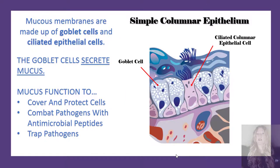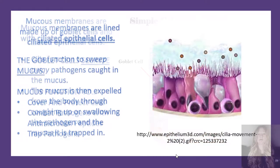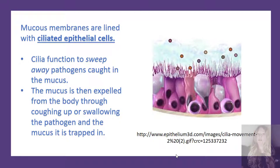The mucus membranes are made up of goblet cells and ciliated epithelial cells. The goblet cells have the job of secreting mucus. Mucus functions to cover and protect cells, to combat pathogens with antimicrobial peptides, and to trap those pathogens. The cilia function to sweep away the pathogens once they are caught inside the mucus. The mucus is then expelled from the body through coughing it up or swallowing it along with the pathogen, and then it can be removed from the body.